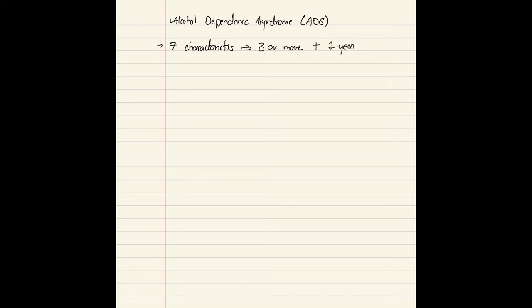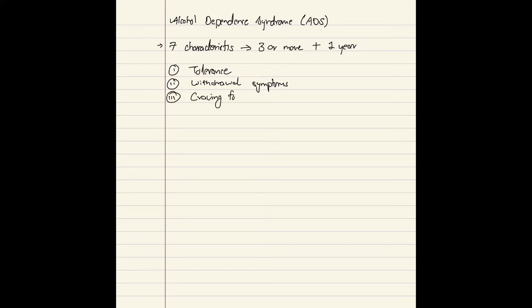The seven characteristics: number one is tolerance, meaning the person needs to increase their dose of alcohol to gain the desired effect. Number two is withdrawal symptoms — if the person does not drink alcohol for a certain period of time, they will show withdrawal symptoms, and after taking alcohol those symptoms are relieved.